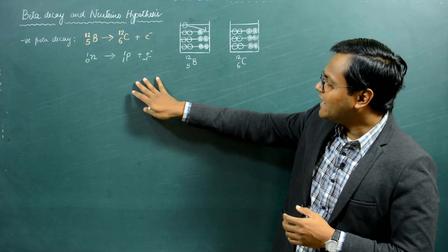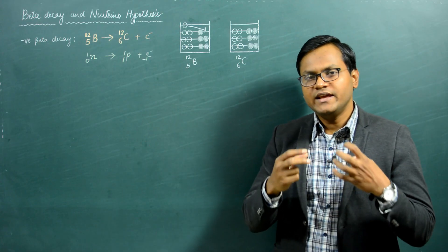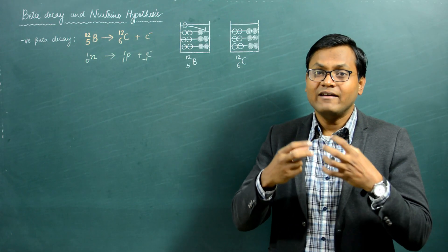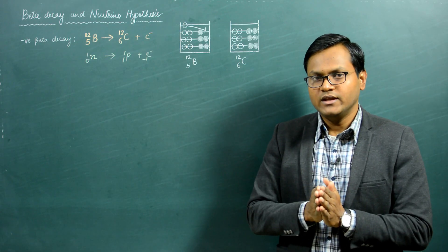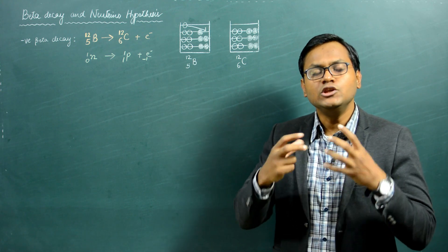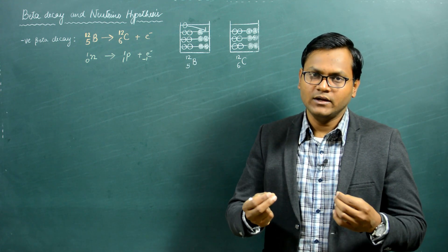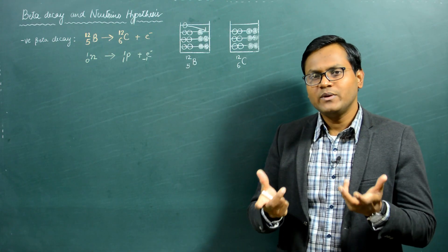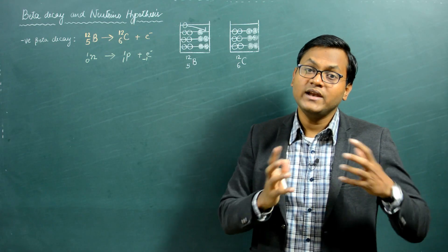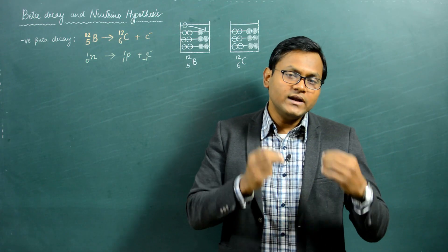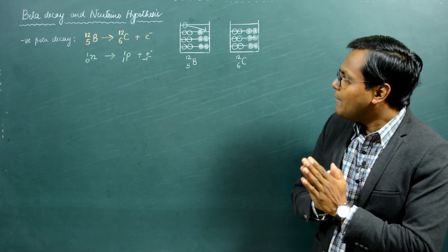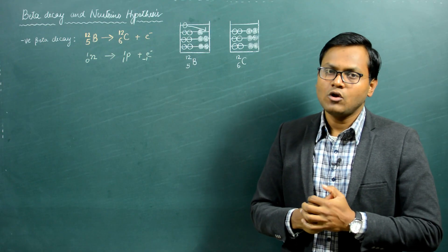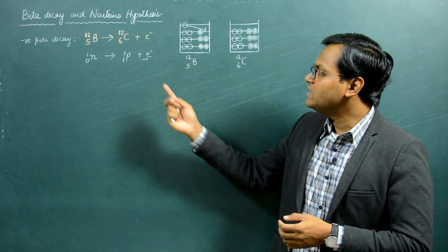Before talking about the different kinds of beta decay processes seen in nature, we need to discuss a very interesting and important historical development associated with beta decay, which has to do with the prediction of a new fundamental elementary particle. This is known as the neutrino hypothesis. Studying the experimental aspects of beta decay led scientists to predict a completely new fundamental elementary particle, by looking at the seemingly violation of certain physical laws taking place in the beta decay reaction.